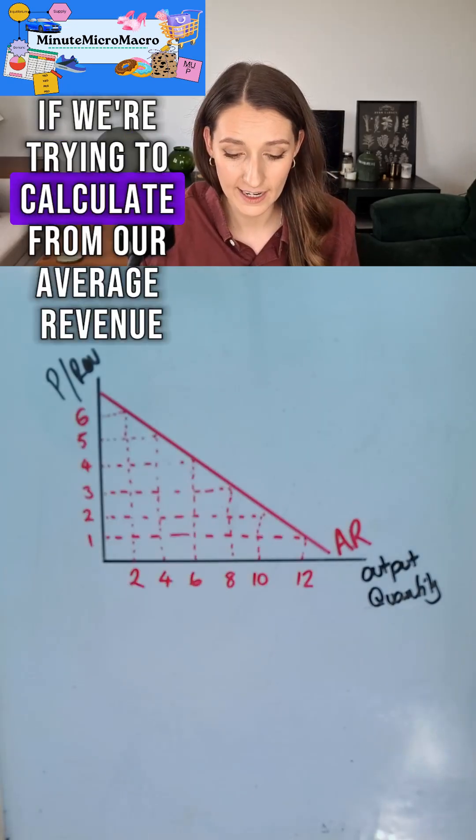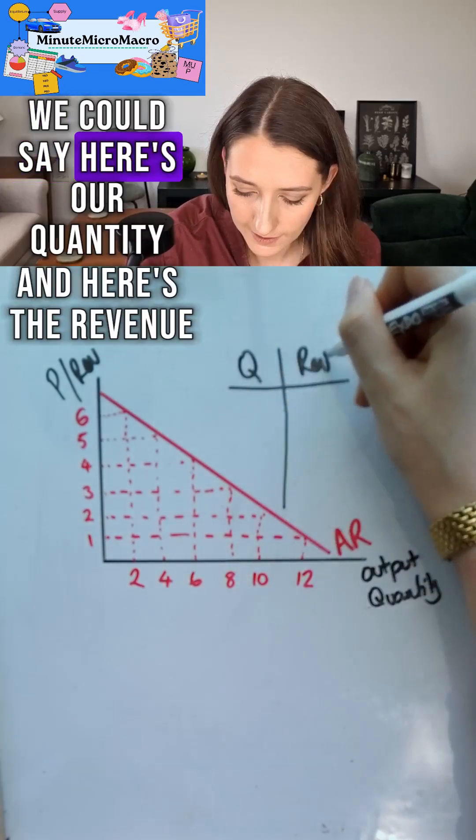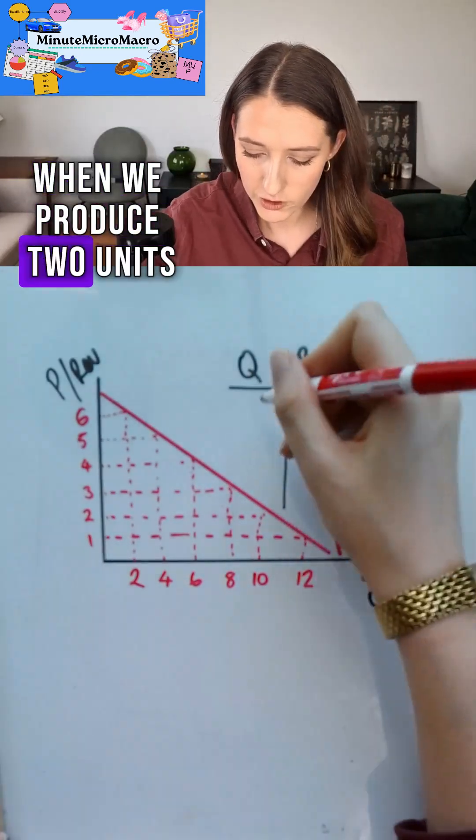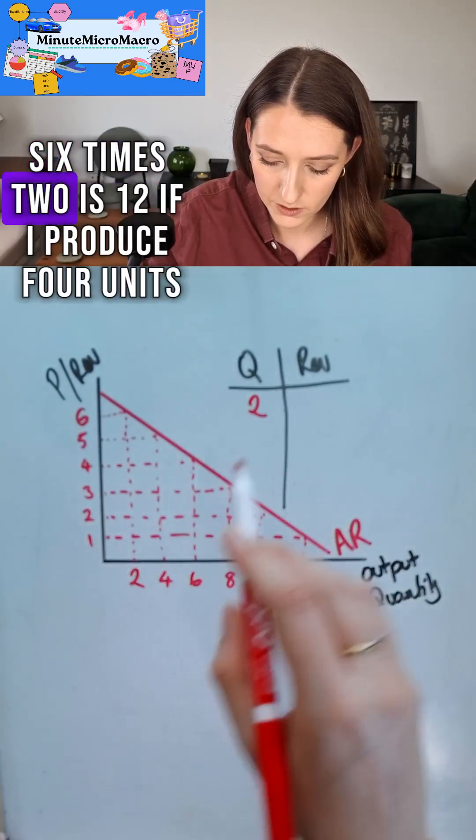If we're trying to calculate from our average revenue the total revenue, we could say here's our quantity and here's the revenue. When we produce two units, we're going to work out our revenue which is price times quantity: six times two is twelve. If I produce four units, I'm going to have a price of five, so five times four is twenty.